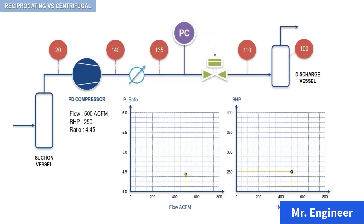Let's now assume that the control valve in the discharge process system is slightly closed. With this action, the pressure upstream of the control valve increases to 170 psi, and the discharge pressure of the reciprocating compressor increases to 180 psi. The horsepower also increases to 300 bhp. So, what has happened to the actual flow in this case? Let's plot the new pressure ratio and brake horsepower to figure it out.